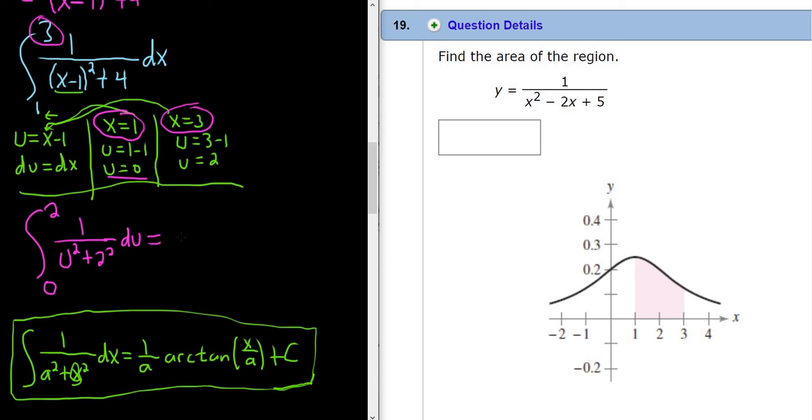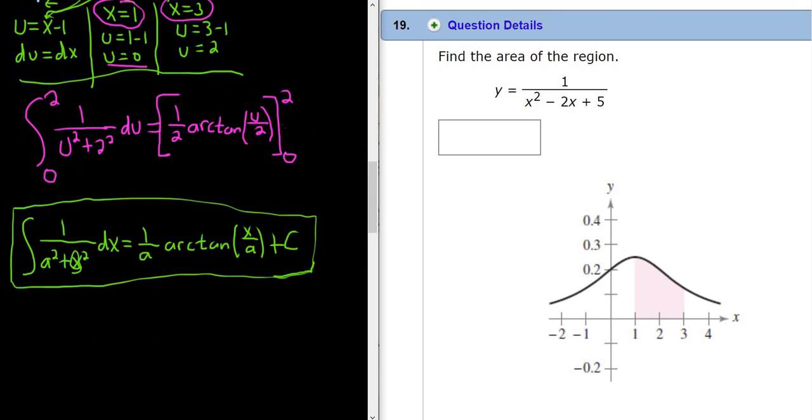Wonderful. This is equal to, using the formula, 1 half arctangent of u over 2. And I'm really tempted to put a plus c, but we don't, because it is a definite integral. Oh, I love this stuff. So we go from 0 to 2. I feel like I'm running out of room here. I'm going to scroll down even more and just skip to down here.